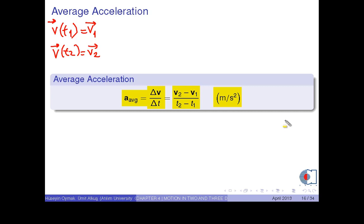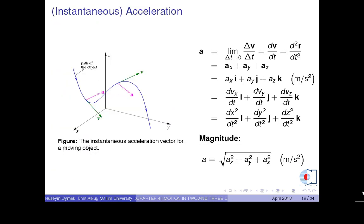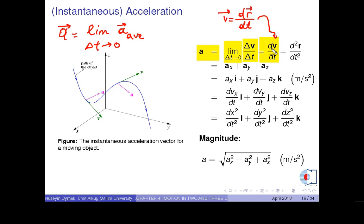Now comes the instantaneous acceleration. The instantaneous acceleration a of an object at any time is defined as the limiting value of a average as delta t goes to 0. That is, a equals the limit as delta t goes to 0 of delta v over delta t, or dv over dt. Since v is also the time derivative of the position vector, that is dr over dt, then acceleration is the second time derivative of the position vector, that is d squared r over dt squared.